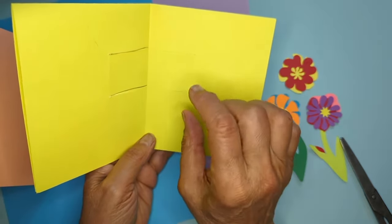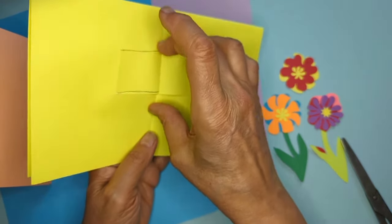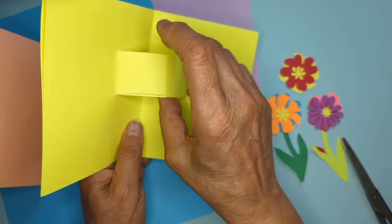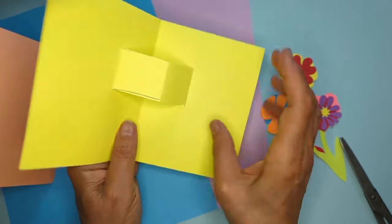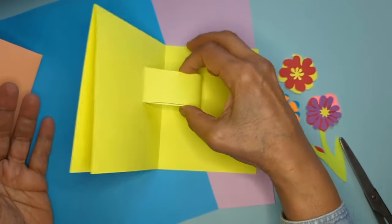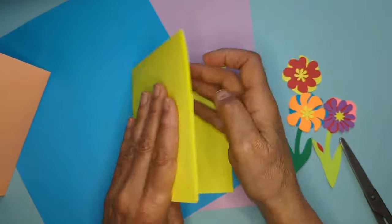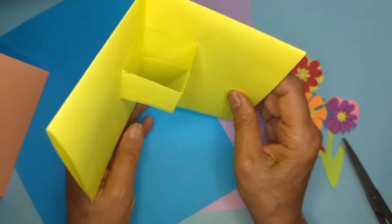I still have one more step to do. I'm going to take that little piece that I had cut and bring it forward. Even if it's flat, I can bring it forward. You can see how it's making the box. And there I've got my pop-up.